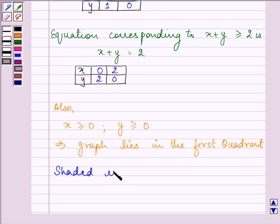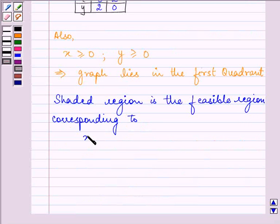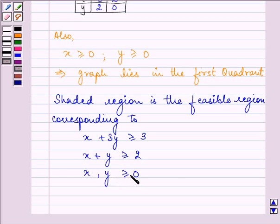The shaded region is the feasible region corresponding to x plus 3y is greater than or equal to 3, x plus y is greater than or equal to 2, and x, y is greater than or equal to 0.